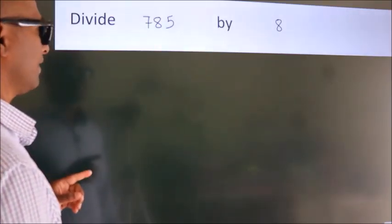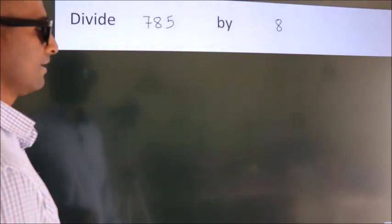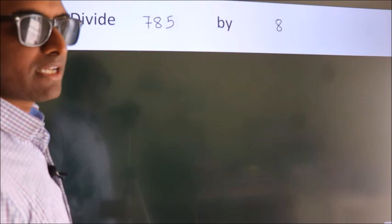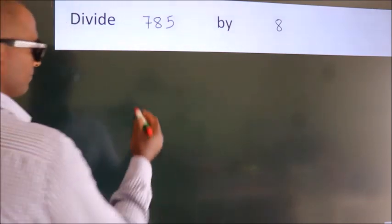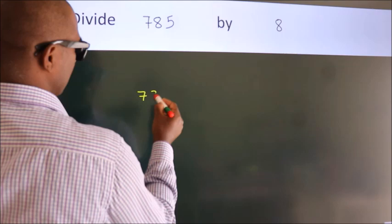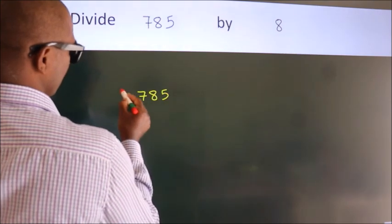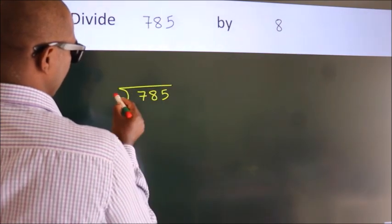Divide 785 by 8. To do this division, we should frame it in this way. 785 here, 8 here.